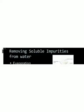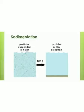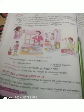بہت سارے processes ہیں جس سے ہم ان insoluble impurities کو پانی سے الگ کر سکتے ہیں۔ جیسے کہ main جو processes ہیں وہ ہیں filtration اور sedimentation — ان دونوں processes کے بارے میں ہم انشاءاللہ کل پڑھیں گے۔ آج ہم اپنا topic یہیں ختم کریں گے۔ امید ہے آپ کو سمجھ آئی ہوگی۔ بچوں spellings اچھے سے learn کرنا ہے۔